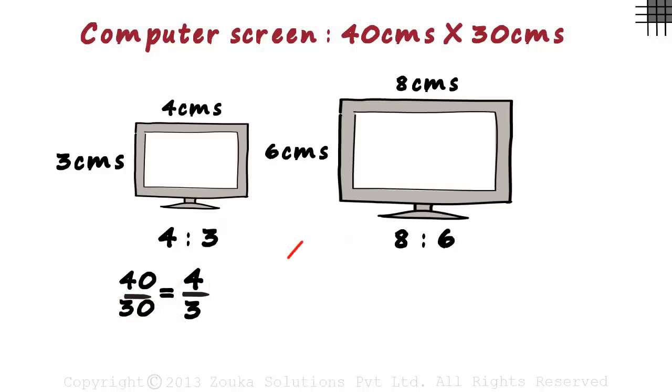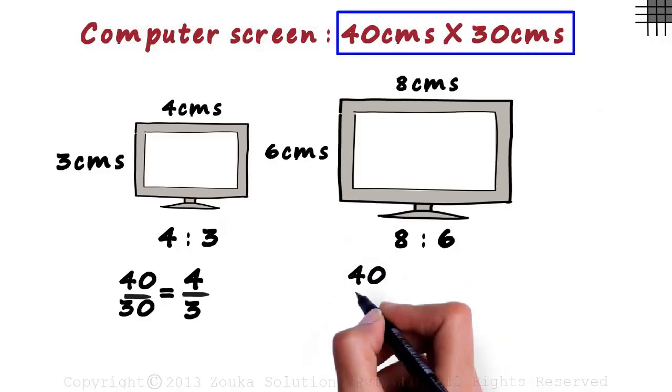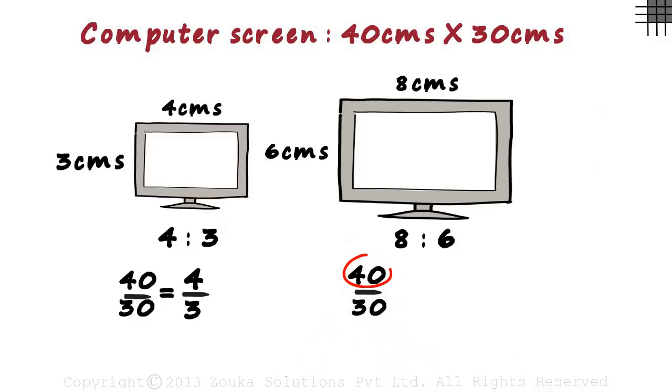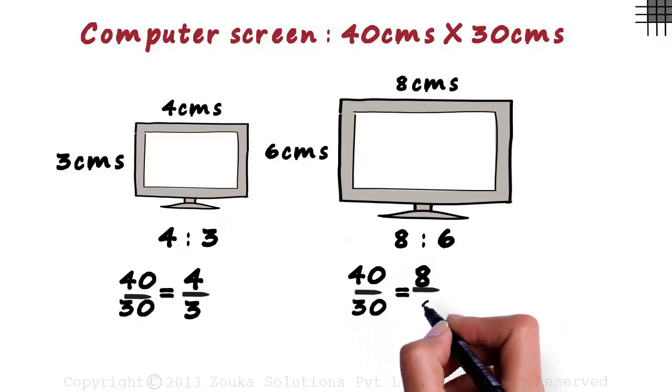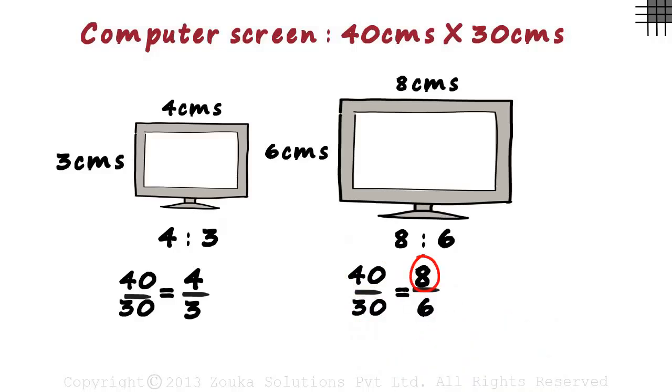Now let's look at the second case of 8 by 6. The ratio of the actual screen was 40 by 30. If both the numerator and the denominator are divided by 5, we get an equivalent ratio of 8 by 6. 40 divided by 5 equals 8 and 30 divided by 5 equals 6.